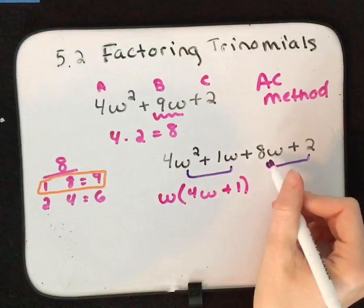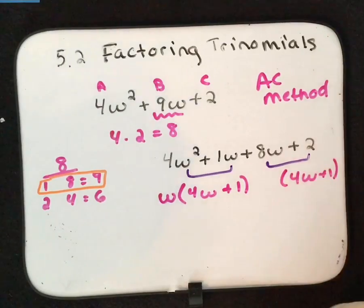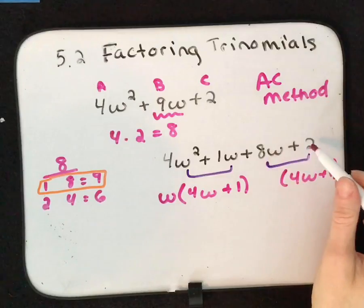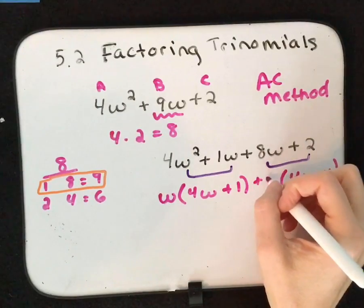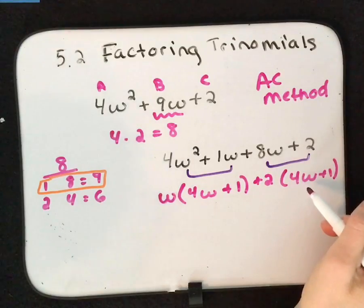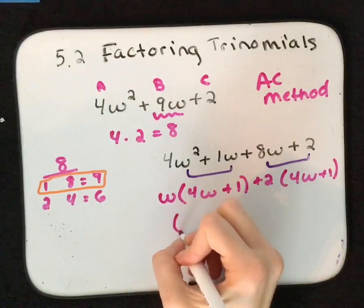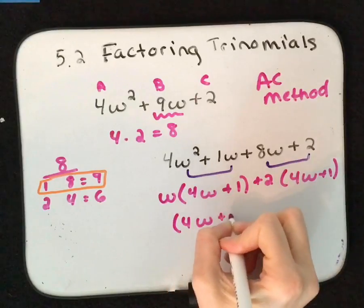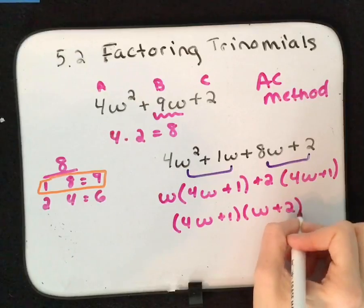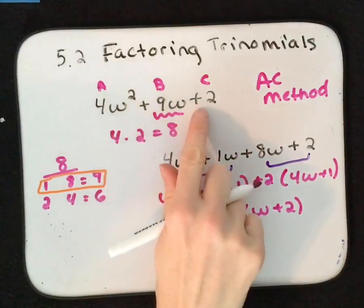Now we look at the second group. We know it has to leave 4w plus 1 when finished. With 8 and 2, I can pull out a 2, giving me 2 times 4w plus 1. What's in common now is 4w plus 1, and what's left over is w plus 2. So the factored form is (4w + 1)(w + 2).